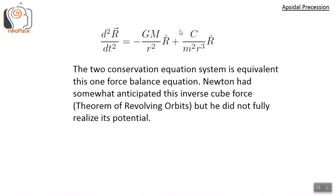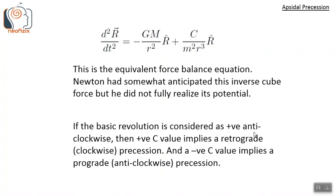Newton had in fact anticipated this inverse cube force in his theorem of revolving orbits, but neither he nor the scientists who followed him fully realized the potential of this term. If the basic revolution is considered positive in the anticlockwise direction, then a positive c value implies retrograde or clockwise precession — precession in a direction opposite to the basic revolution — and a negative c value implies prograde or anticlockwise precession, in the same direction as the basic revolution.